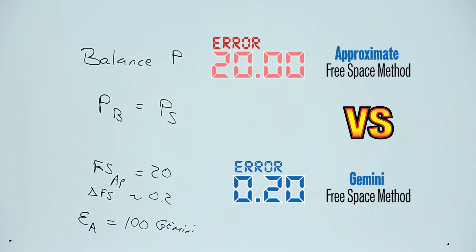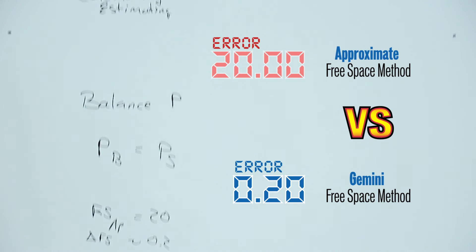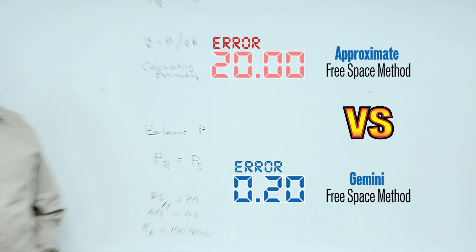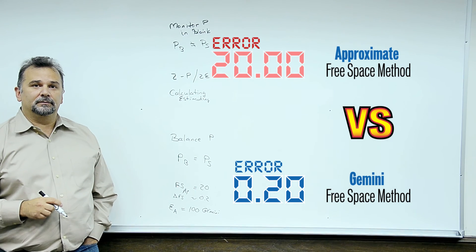It's very easy to distinguish the Gemini error from the approximate free space error. Thank you.